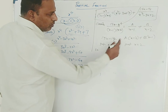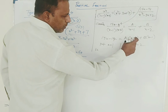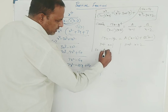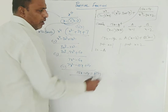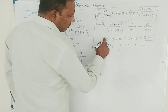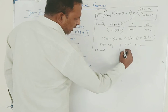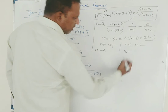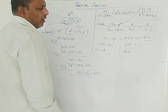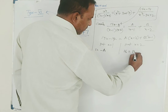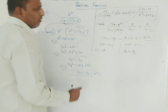Put x equal to 1 and x equal to 2 to find a and b. When x equals 1: 15 minus 14 gives 1 equals a times minus 1, so a equals minus 1. When x equals 2: 30 minus 14 gives 16 equals b times 1, so b equals 16.